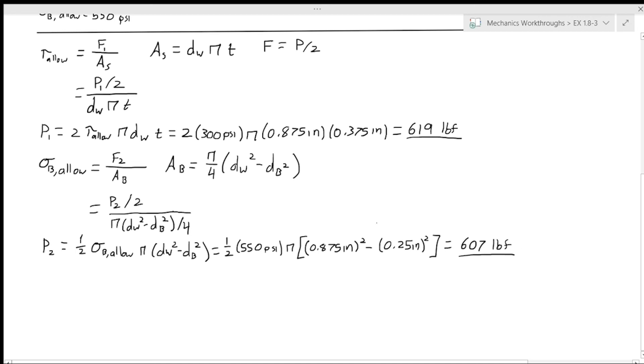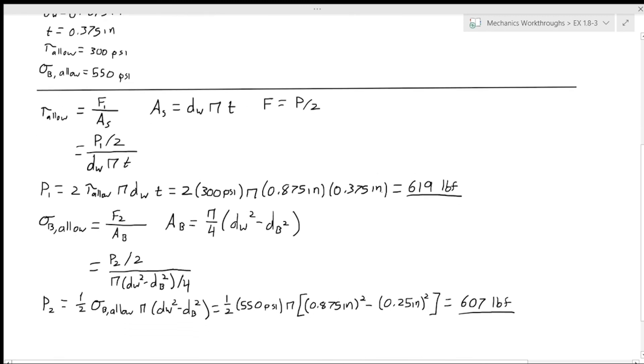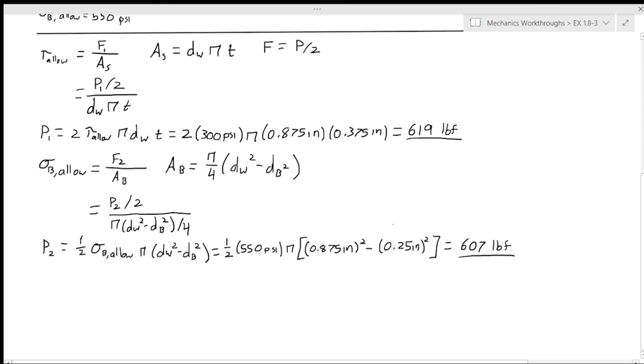So we have our two allowable forces due to our different restrictions, and we find the more restrictive one, which in this case is p2. It's smaller, so we want to keep the force below 607 pounds so that we do not break the fiberglass.